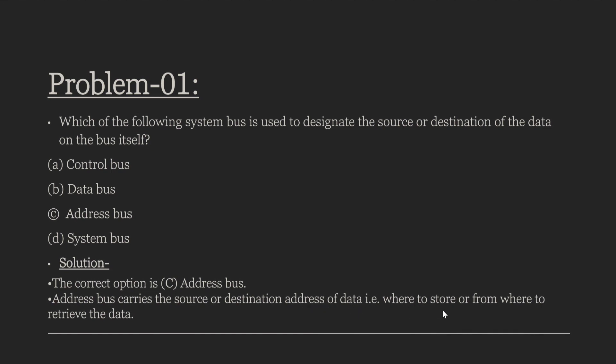Where to store, or from where to receive or retrieve the data. Basically, the address bus is connected to the data source and destination — wherever the data has to go, the address bus carries that information to the destination.